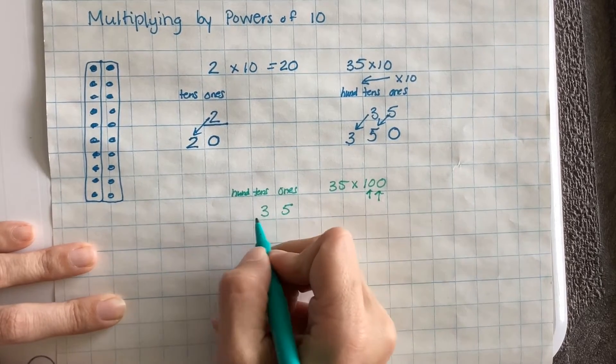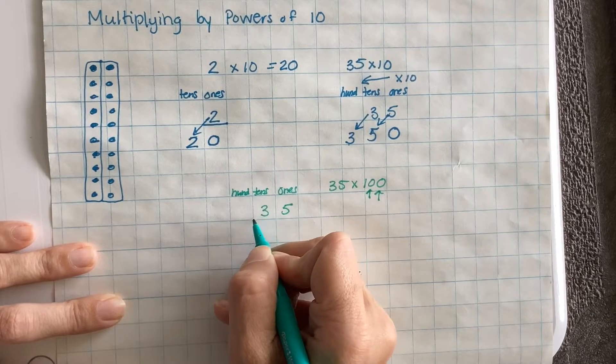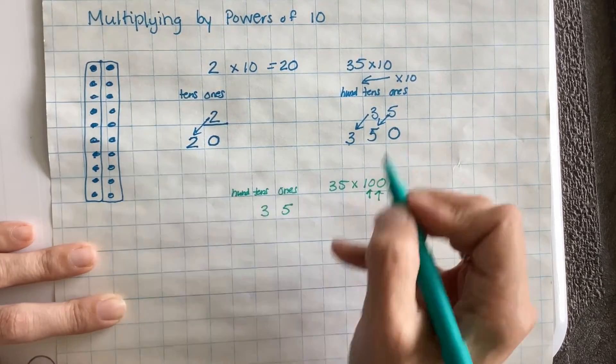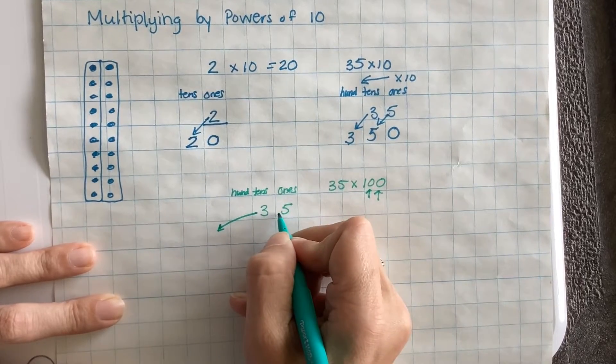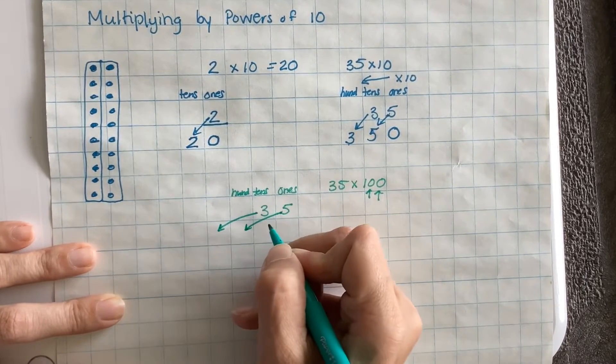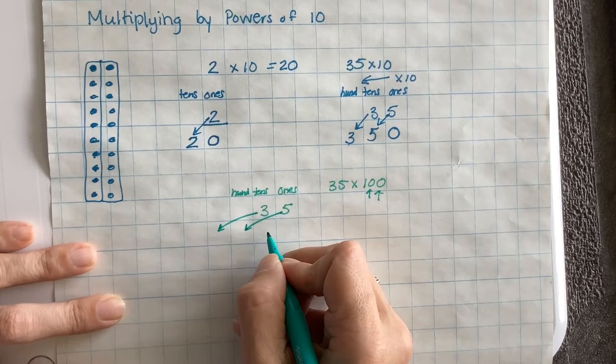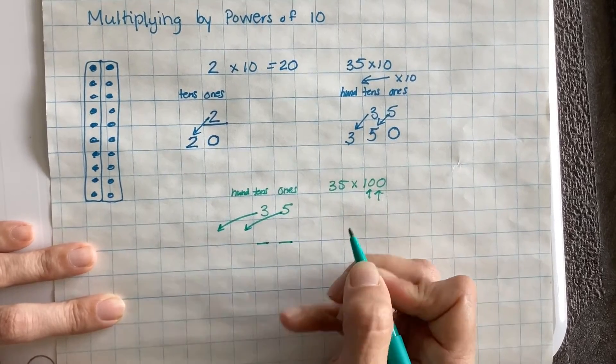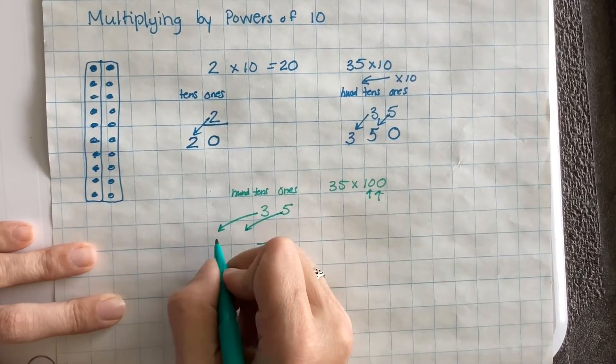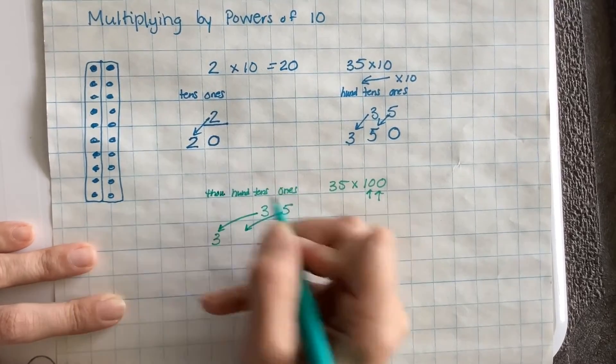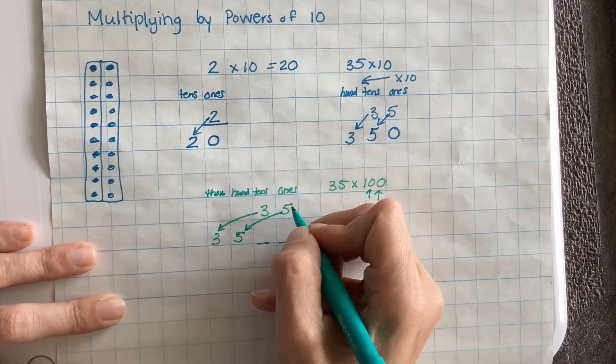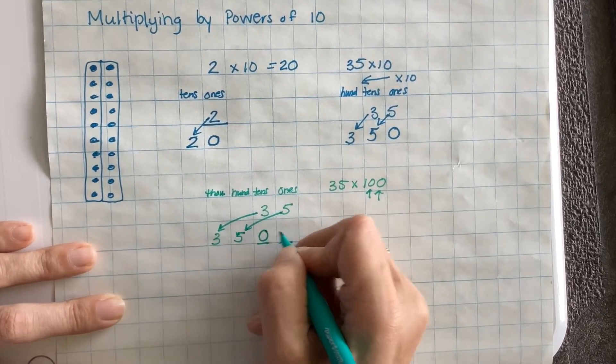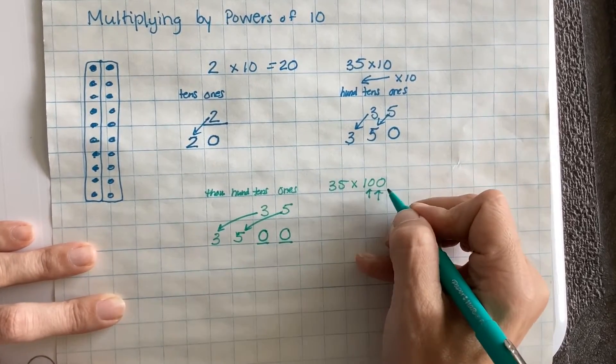So now instead of the 3 moving into the hundreds place because I'm multiplying by 1 power of 10, it's actually going to come all the way over here and the 5 comes all the way over here. And I end up with 2 empty place values. So now the 3 becomes 3 in the thousands place and the 5 is 500s. And we have to put 2 placeholder zeros here because we get 2 powers of 10.